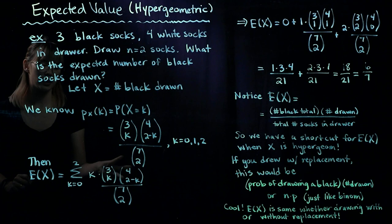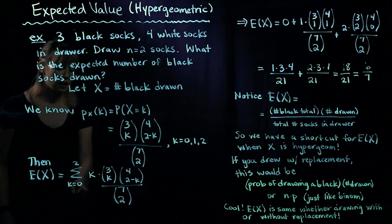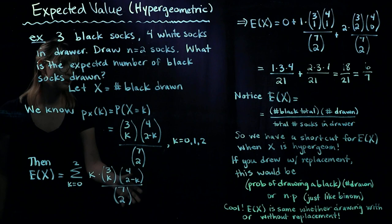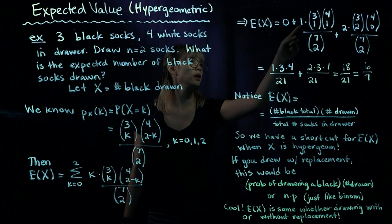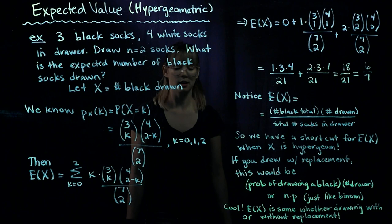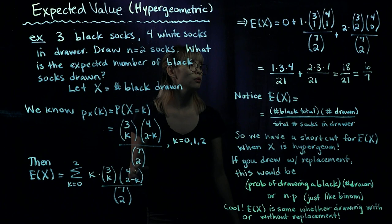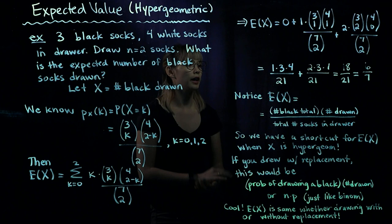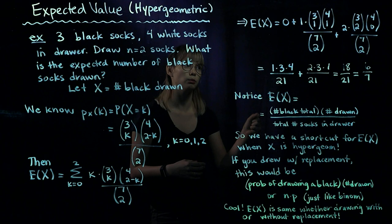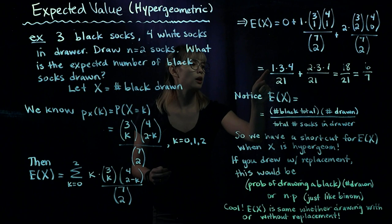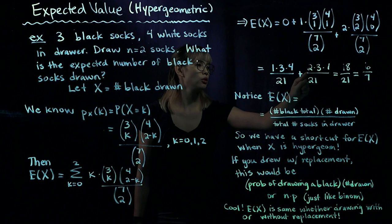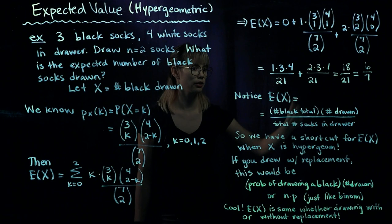We only have three pieces in this sum, so we can write them out. When K equals zero, we have zero times something, so that's zero. For K equals one, we get one times three choose one times four choose one divided by seven choose two. For K equals two, we have two times three choose two times four choose zero divided by seven choose two. Writing these in terms of factorials and computing: the first term gives one times three times four divided by 21, and the second term gives two times three times one divided by 21. So we get 18 out of 21, or six sevenths.